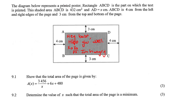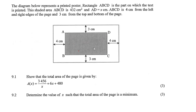Okay, so the diagram below represents a printed poster. Rectangle ABCD is the part in which the text is printed. The shaded area is 432 square meters. Okay, Kev, get your nonsense off here, my bro. Let's be serious now.